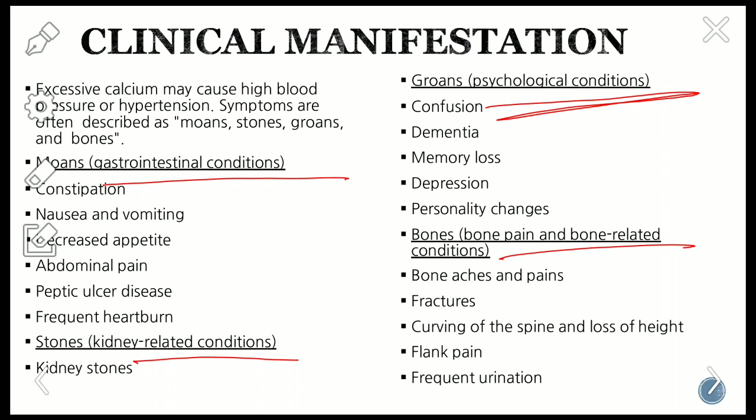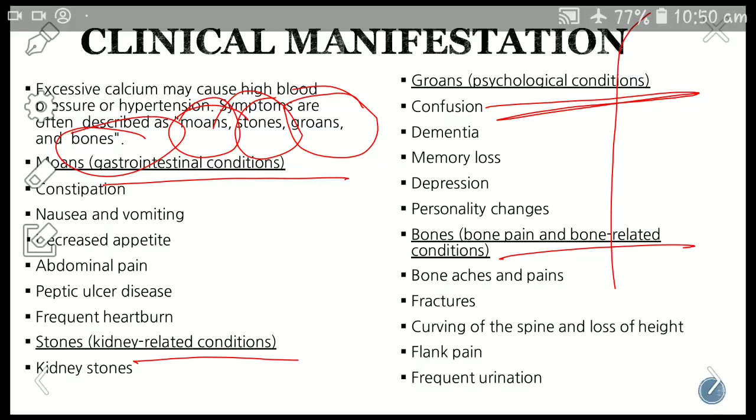Excessive calcium may cause high blood pressure or hypertension. Symptoms are often described as moans, stones, groans, and bones — these are the characteristic manifestations of hyperparathyroidism. Moans refers to gastrointestinal conditions like constipation, nausea, vomiting, decreased appetite, abdominal pain, peptic ulcer, and frequent heartburn.